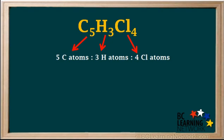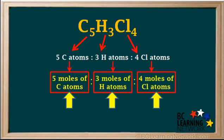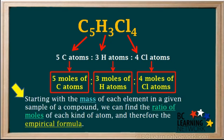Of course single atoms are too small to count individually, but moles of atoms are something we can actually measure and compare in the lab. Since a mole of any entity is the same number, it follows that there are 5 moles of C atoms to 3 moles of H atoms to 4 moles of Cl atoms. Starting with the mass of each element in a given sample of a compound, we can find the ratio of moles of each kind of atom, and therefore the empirical formula.